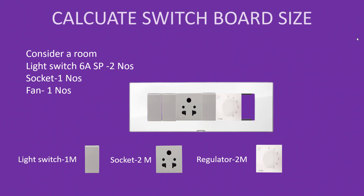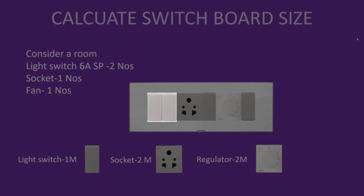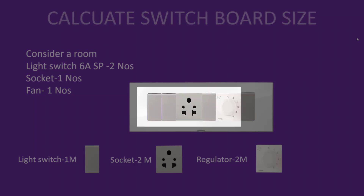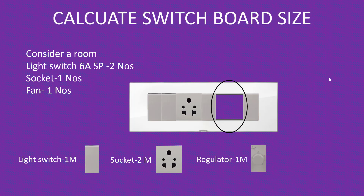The fan regulator alone is not sufficient — we also need a switch for the fan, so one additional module. Adding it all up: two light switches = 2 modules, one socket = 2 modules (total 4), switch for socket = 1 module (total 5), fan regulator = 2 modules (total 7), switch for fan = 1 module — giving a total of eight modules. So we select eight module plates and an eight module concealed box. If the fan regulator is one module, only seven modules are occupied and one space is vacant, which we fill with a blank plate to ensure safety and a more aesthetic look.